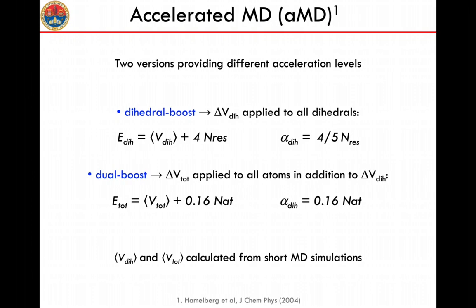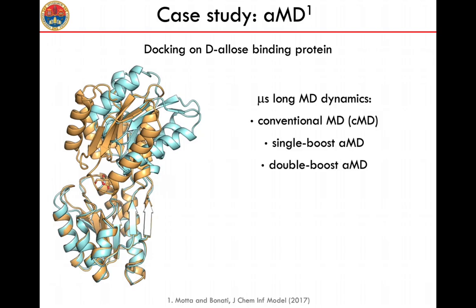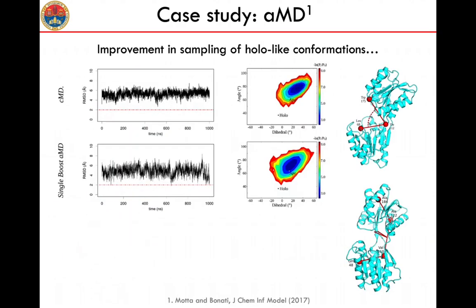Two flavors of accelerated MD exist. In the single boost (dihedral boost) approach, a boosting potential is applied only to dihedral angles. In the double boost (dual boost) version, an additional potential is applied to all atoms. The energy thresholds and averages used in the formulas are calculated from short unbiased MD simulations of the system. Motta and Monetti applied accelerated MD to generate conformational transitions improving the binding of allose to the allose-binding protein, which undergoes a very large conformational change upon binding.